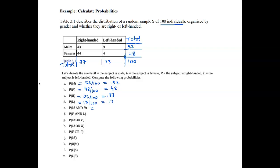Now let's look at some combined probabilities. The probability of M and R — picking a male who is also right-handed — there are 43 right-handed males out of 100, so this is 43 out of 100, or 0.43. The probability of F and L — left-handed females — is 4 out of 100, or 0.04.